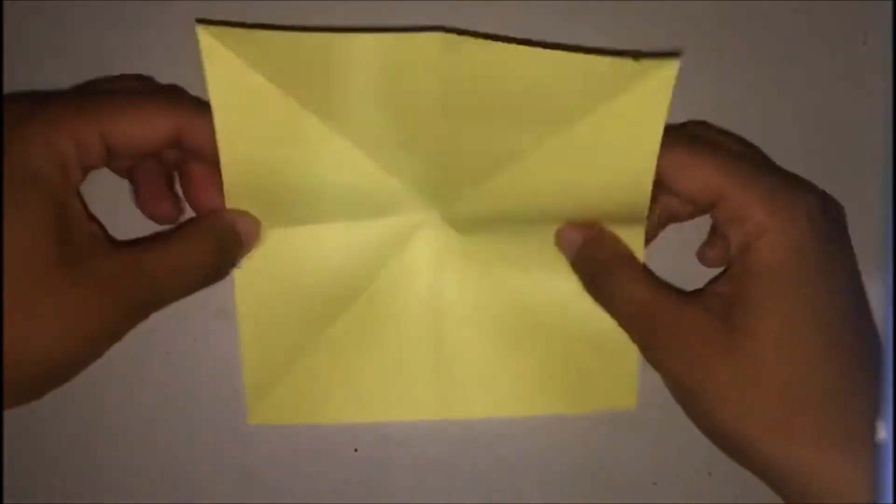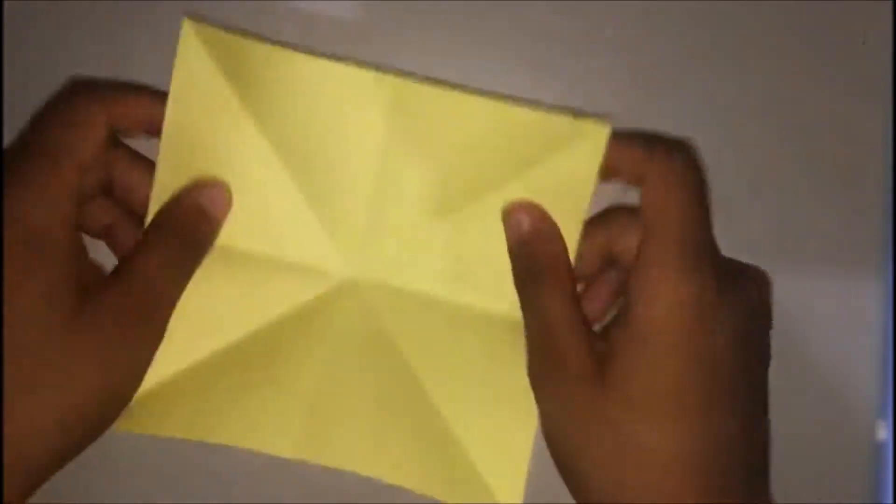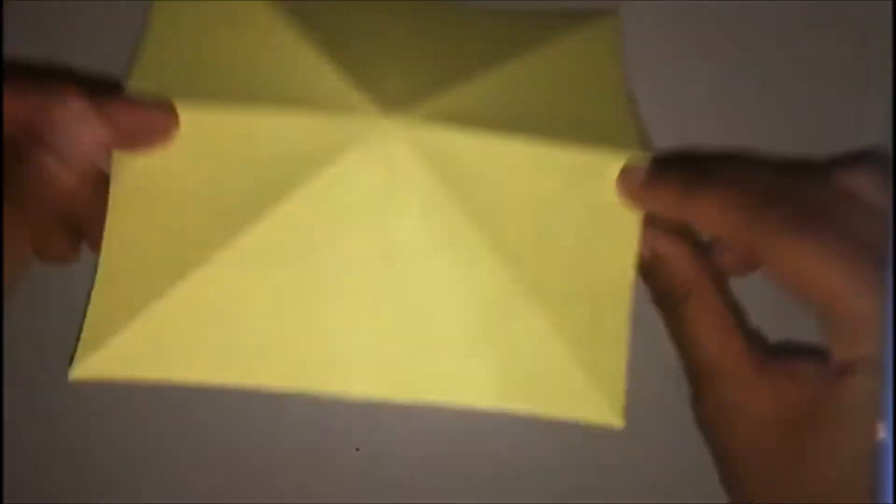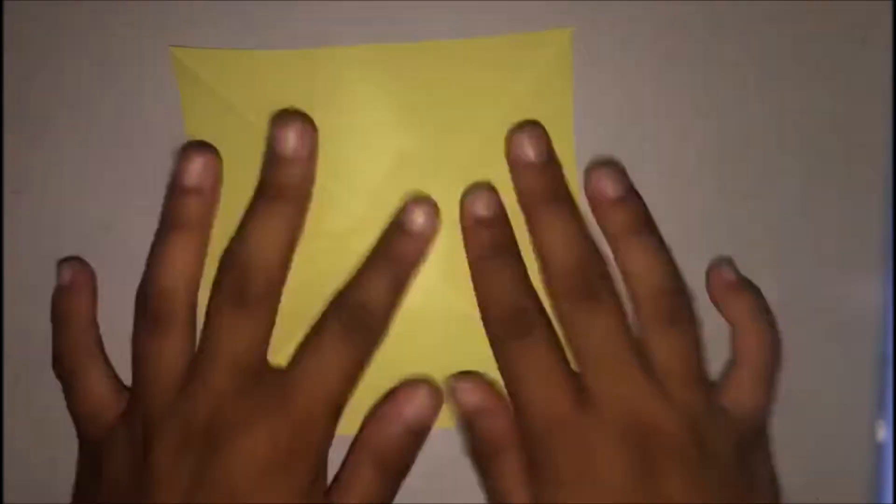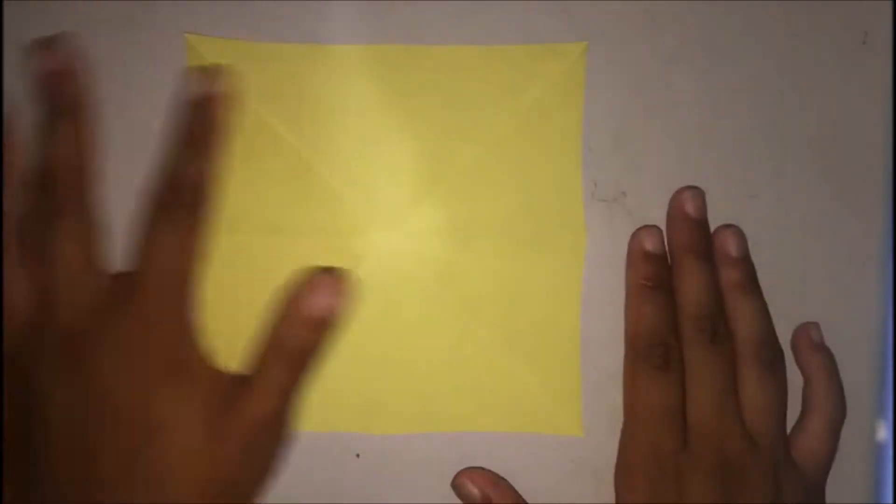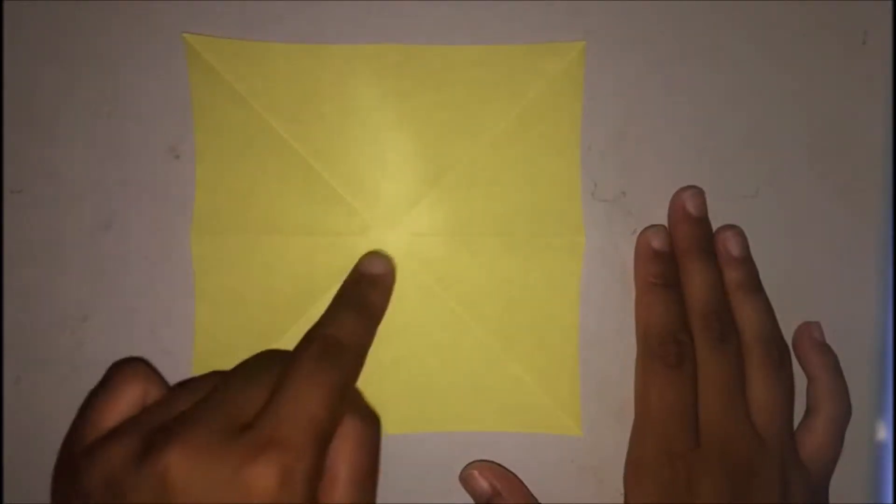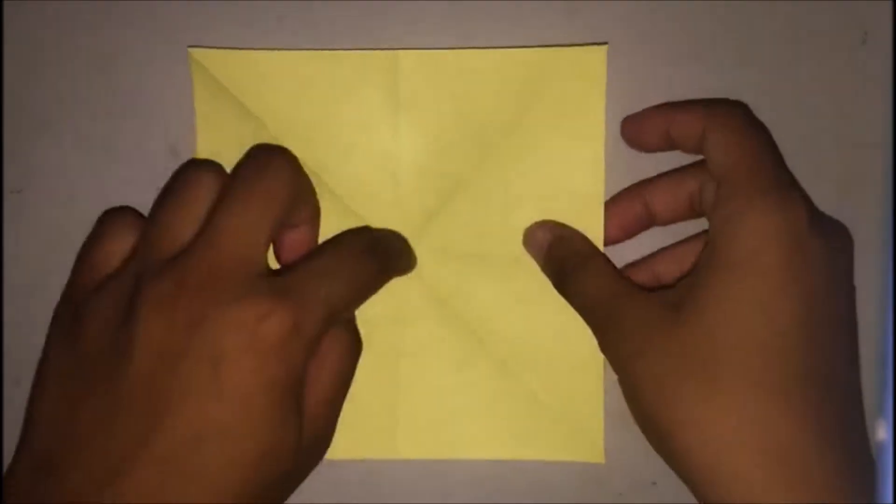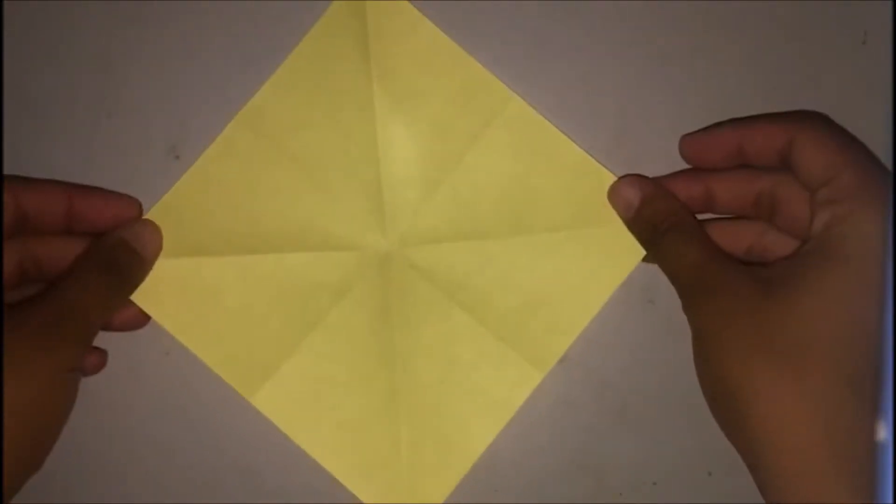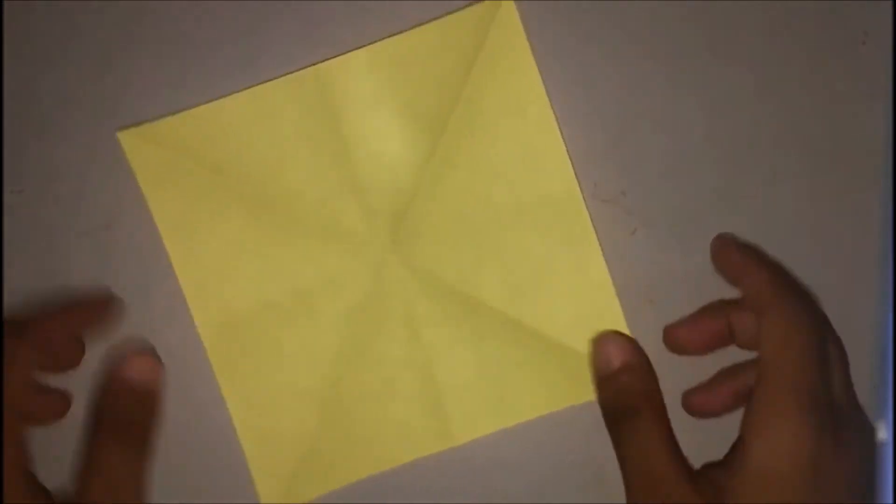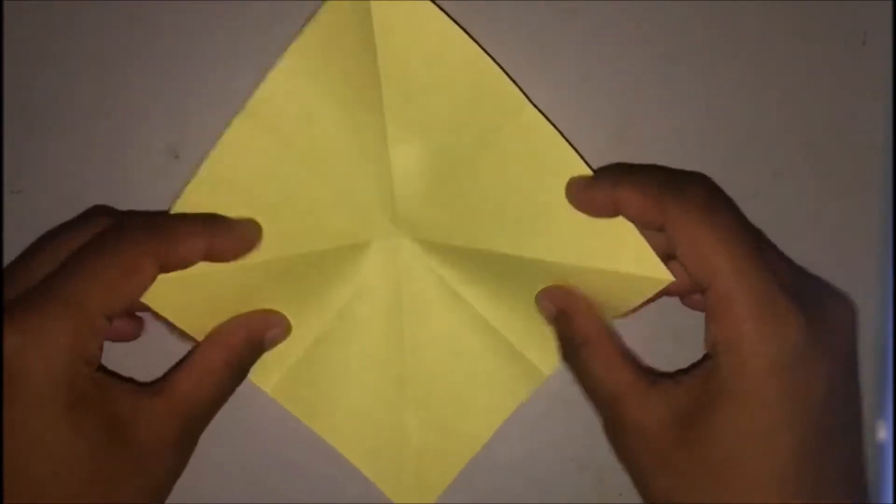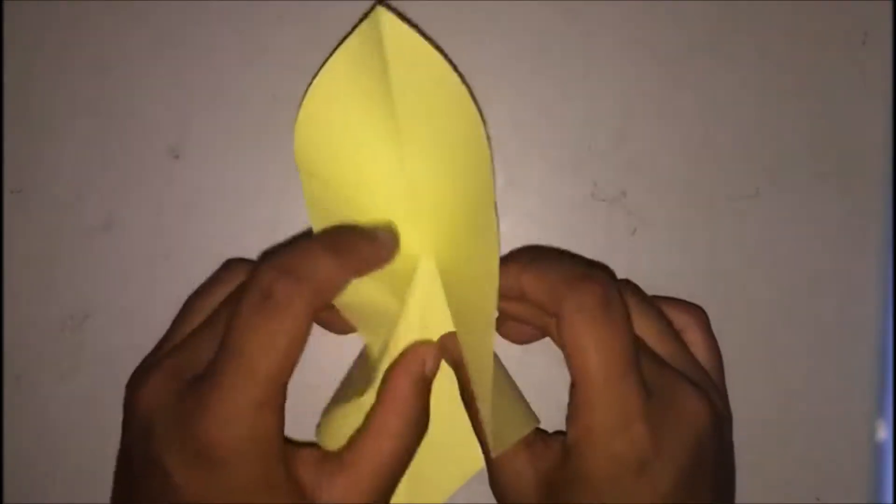Now that you've done that step, you're going to flip the paper over. So you see this mountain top up here, you fold it down. And once you fold it down, turn the side to make it like a diamond shape. Take both ends and fold them in.